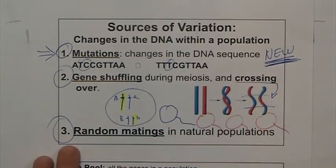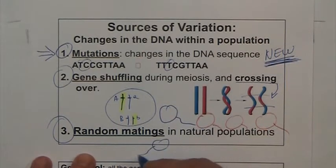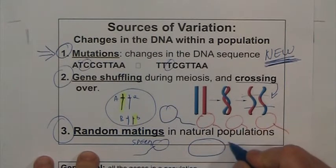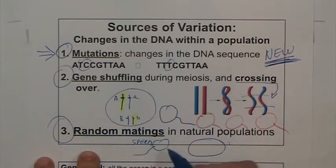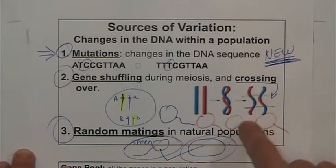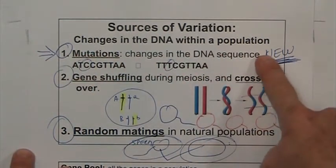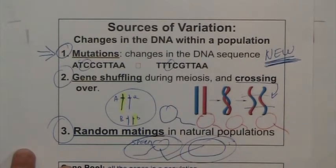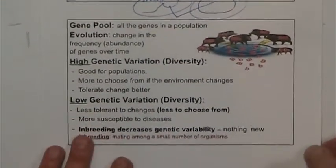And then you have the third factor: when you have two gametes — a sperm and an egg — remember that individuals produce millions of sperms, and eggs, depending on the species, can also be a great diversity. Which sperm fertilizes which egg? That's another source of variation — which traits carried in the sperm are going to mix with which traits carried in the egg. So all of this contributes to creating new combinations. Mutations are the only source of new traits, but gene shuffling and sexual reproduction through random matings produce new combinations of genes, which produce new types of phenotypes.